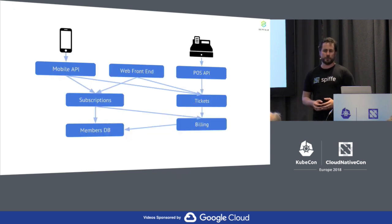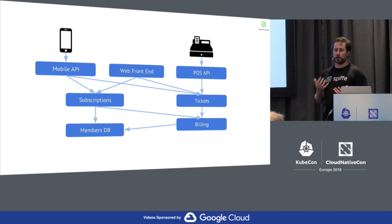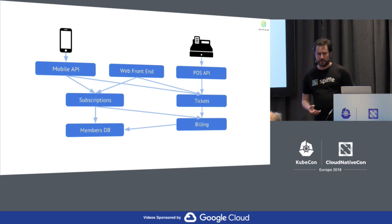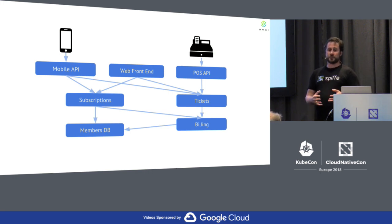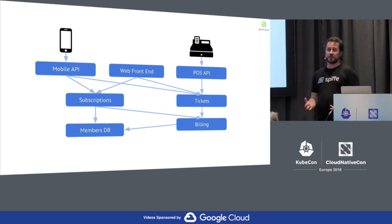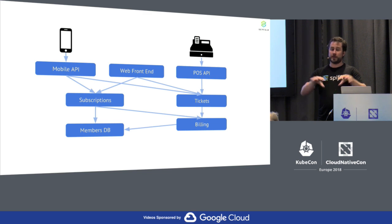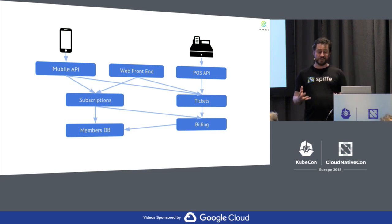What is becoming increasingly a more acute problem is really twofold. One is simply the number of workloads that need to establish trust between each other to deliver some kind of customer experience. When people start throwing around words like microservices or service-oriented architecture, what that means in practice is you have a number of discrete, independent running processes connected over a network that need to trust each other. The number of these things is growing.